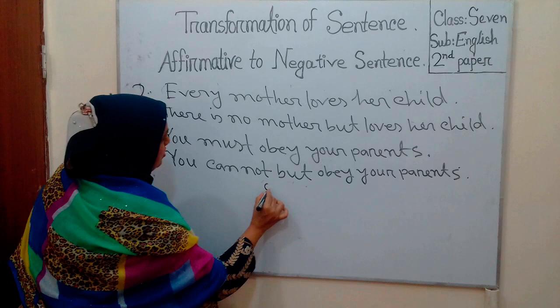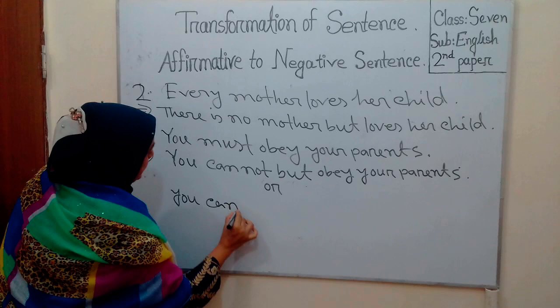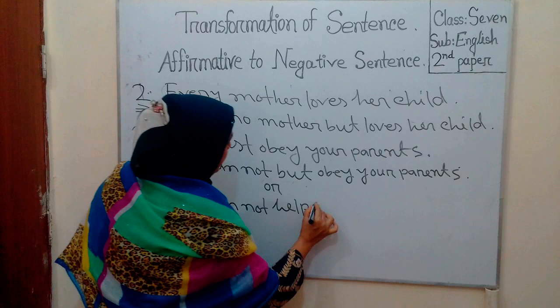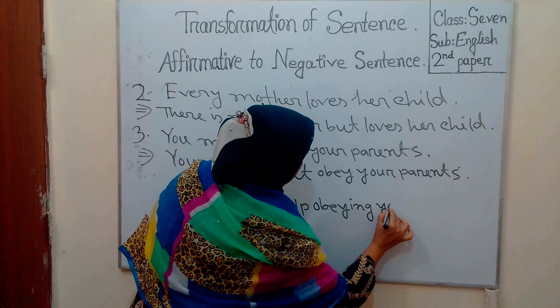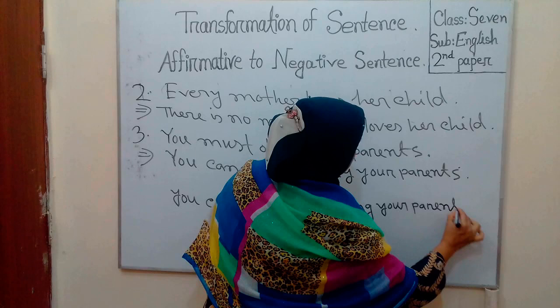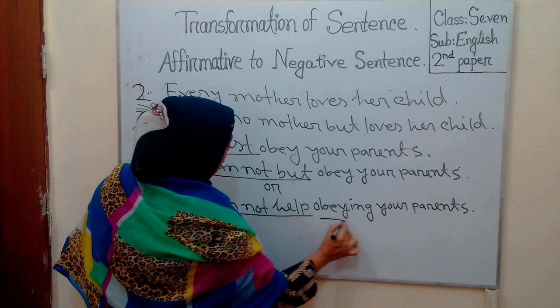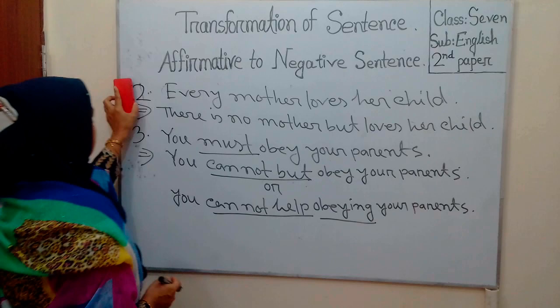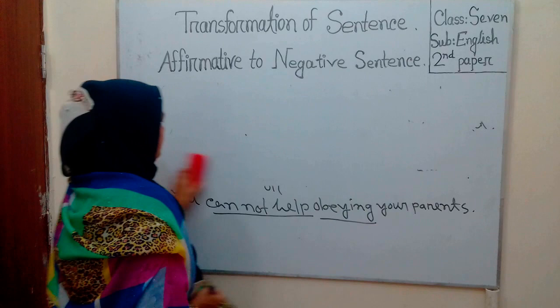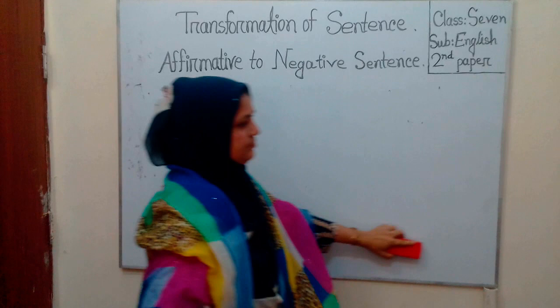Or: 'You cannot help obeying your parents.' So 'must' becomes 'cannot but' or 'cannot help' plus verb-ing.